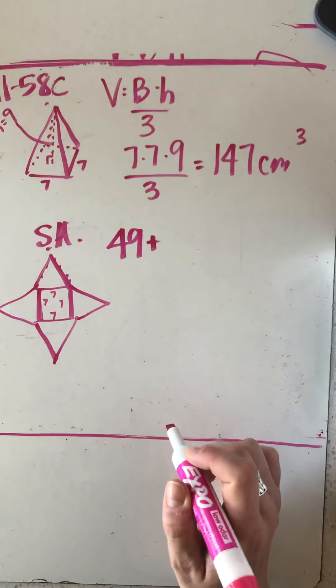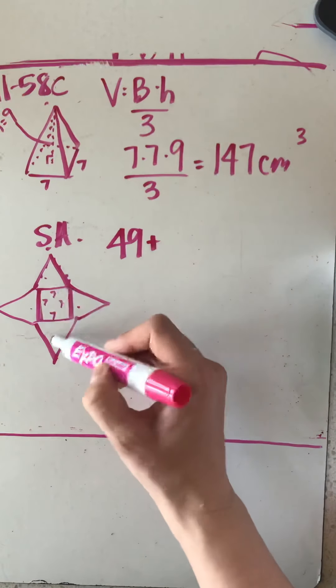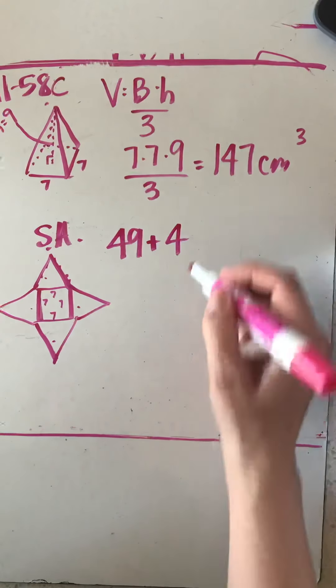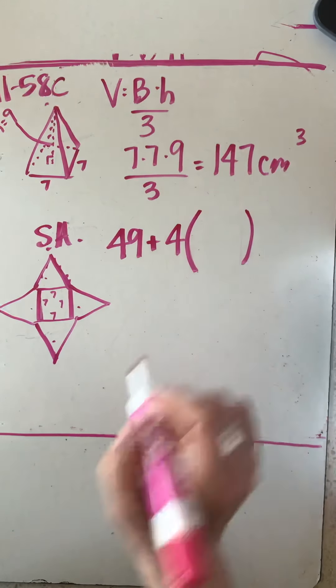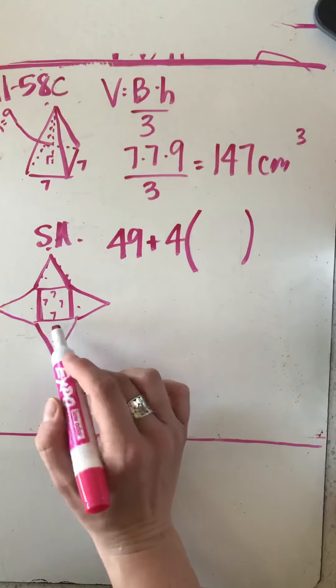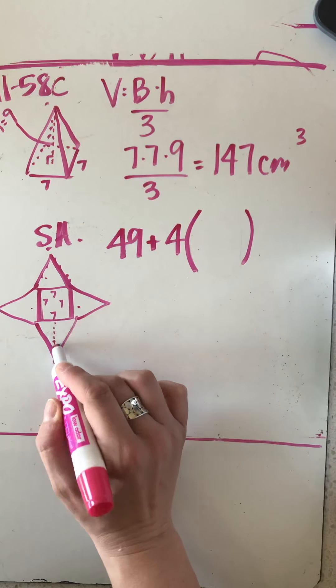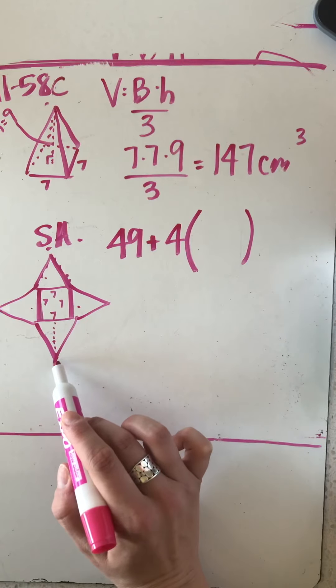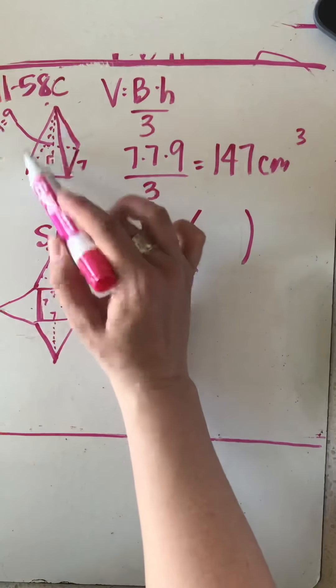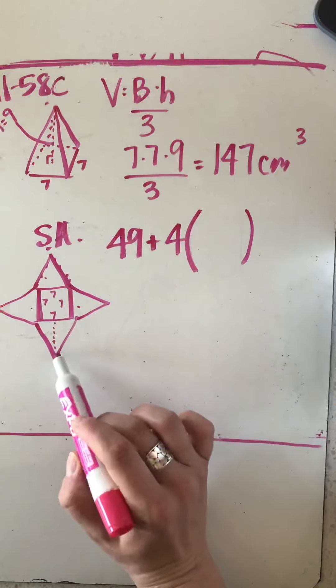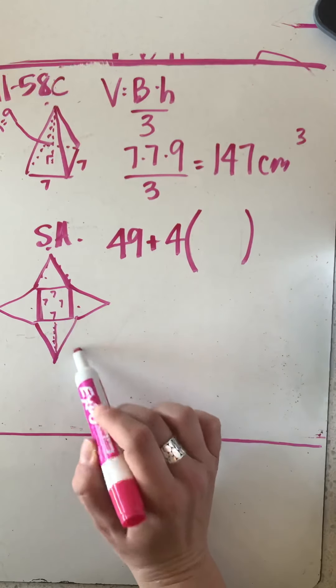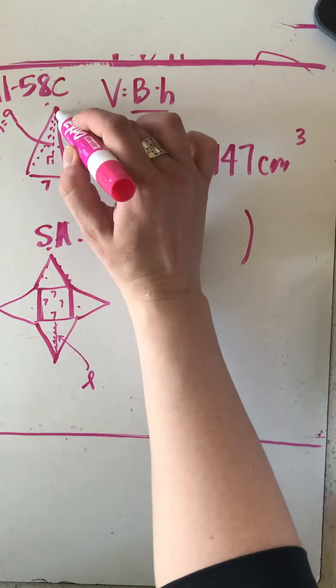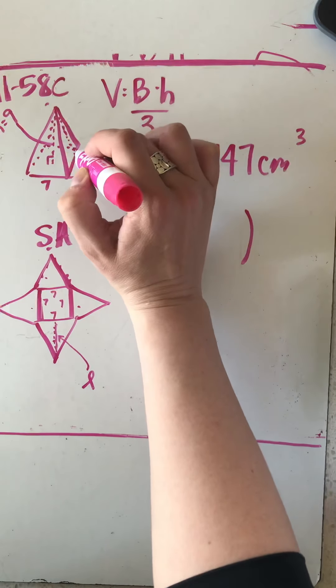Then we know that because there are four triangular faces, I can just find the area of one and multiply by four. So the area of a triangle is base times height. Now unfortunately we don't know the height of this triangle. We know the height of the pyramid is nine but this length right here is actually the slant height. It's this length right here that's coming down from the apex to the edge.